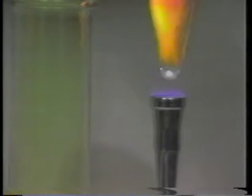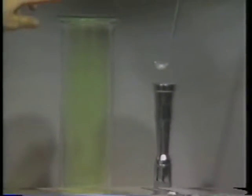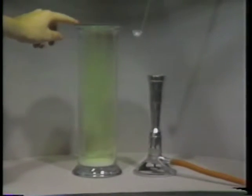Sodium metal is heated until it melts and just begins to burn. Then it is immersed into the yellow-green chlorine gas. The sodium begins to burn in chlorine with an intense yellow flame.